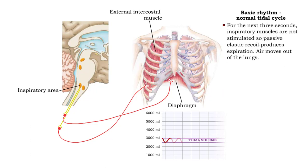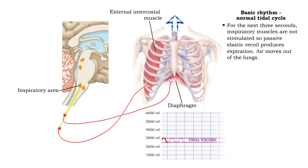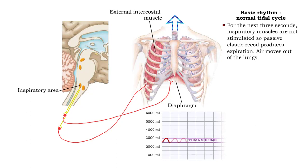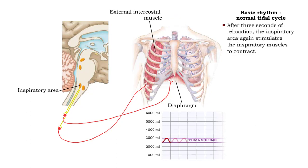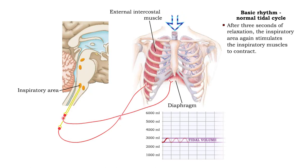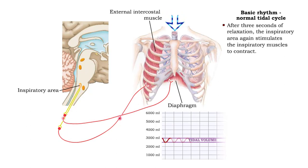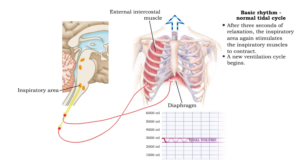For the next three seconds, inspiratory muscles are not stimulated, so passive elastic recoil produces expiration and air moves out of the lungs. After three seconds of relaxation, the inspiratory area again stimulates the inspiratory muscles to contract, and a new ventilation cycle begins.